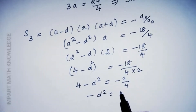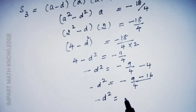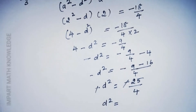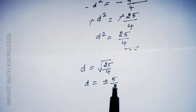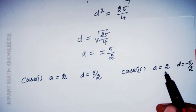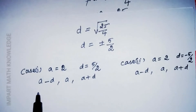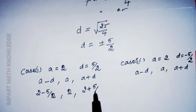Continuing: -d² = -9/4 - 4 = -25/4. Cancelling the negative sign, d² = 25/4, so d = ±5/2. Case 1: a = 2, d = 5/2. Case 2: a = 2, d = -5/2.